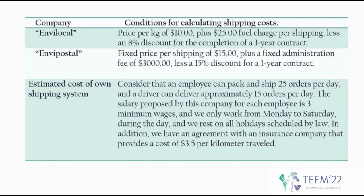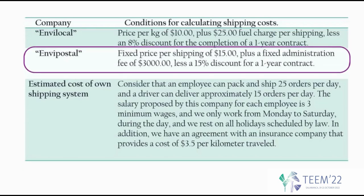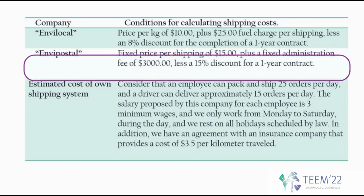Envilocal Company is the first option. Their costs are estimated by a price per kilogram of 10 pesos, plus 25 pesos fixed charges per shipping, plus an 8% discount for completing a one-year contract. Envipostal offers a fixed price per shipping of 50 pesos, plus a fixed administration fee of 3,000 pesos, less a 50% discount for a one-year contract.